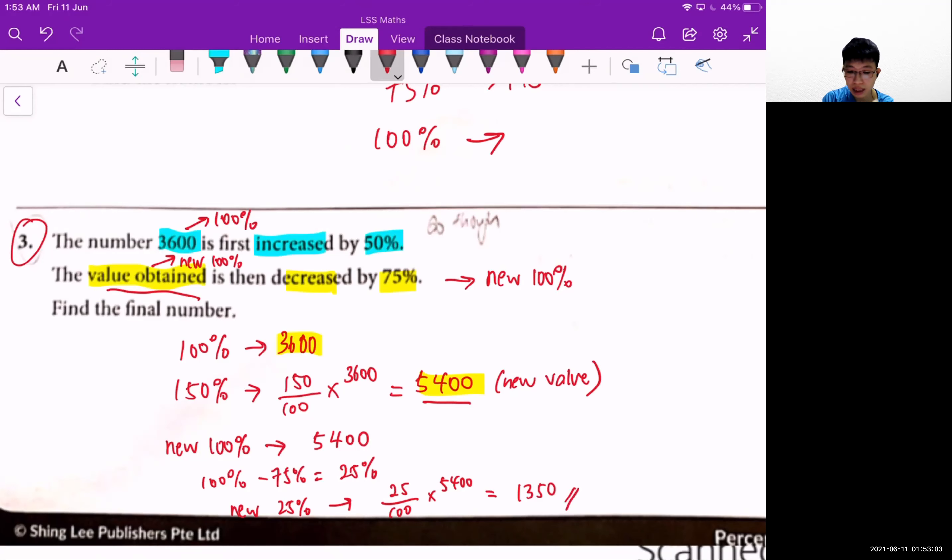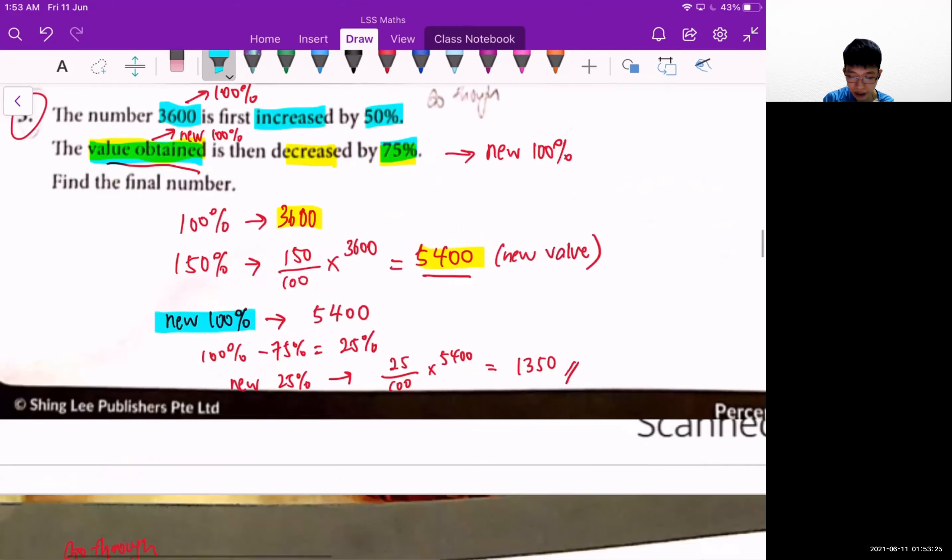The thing to take note is that now we have a new 100% when we're looking at the new percentage change. So we cannot use back 150 again. It must be treated as a new 100% as this 75% here is based on this new value as a new 100%. If you're confused with this part, please text me to ask.